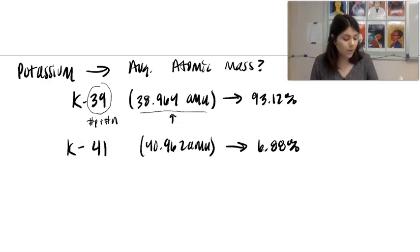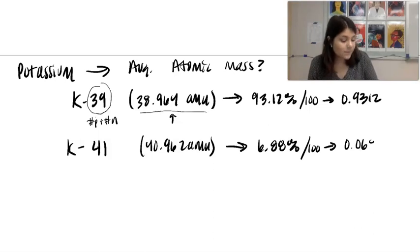All right, so assuming that you guys tried it. Here, this ends up being 0.9312. This ends up being 0.0688. This is where I see students mess up. It's right here. They end up making it 0.688 instead of the 0.0688. So be careful.